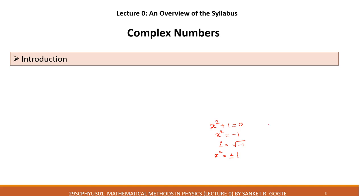Similarly, suppose you have the equation x squared plus 4 equals 0. Taking 4 to the right hand side, we get into trouble because of the minus sign. The solution becomes x squared equals minus 1 times 4, and taking the square root gives plus or minus i times 2, or generally written as plus or minus 2i. This is how complex numbers came into the picture.